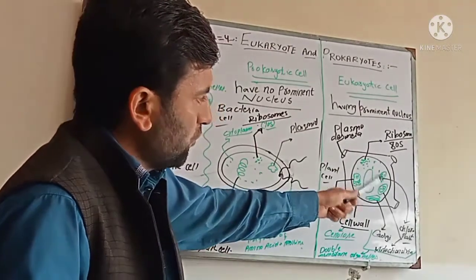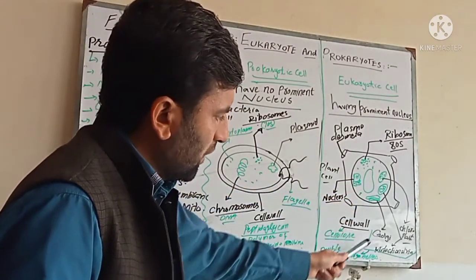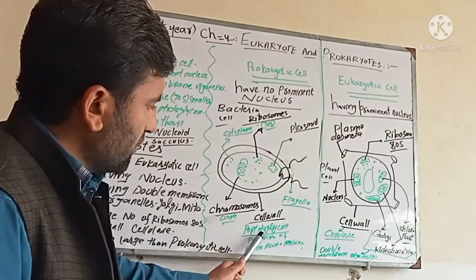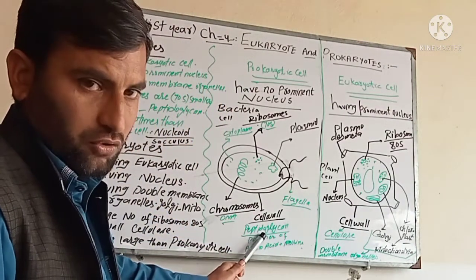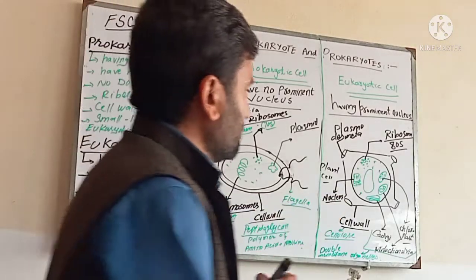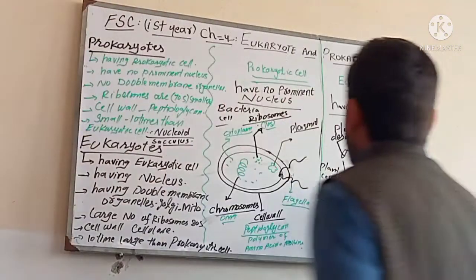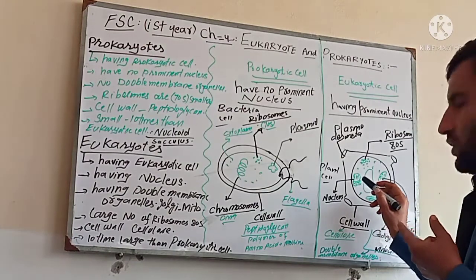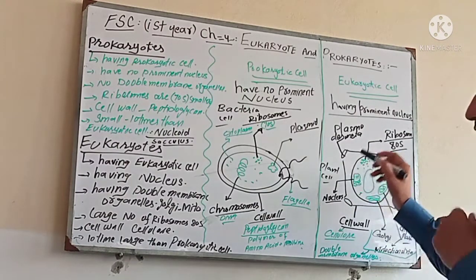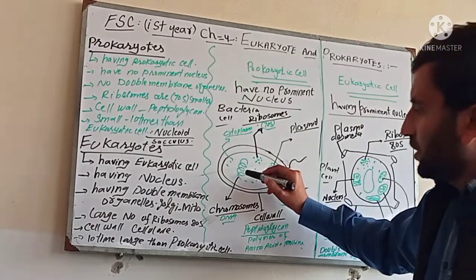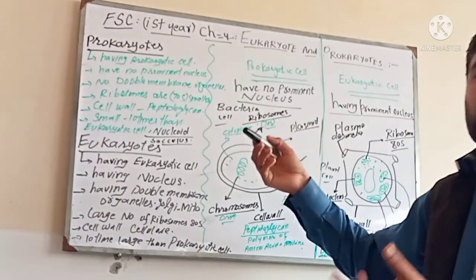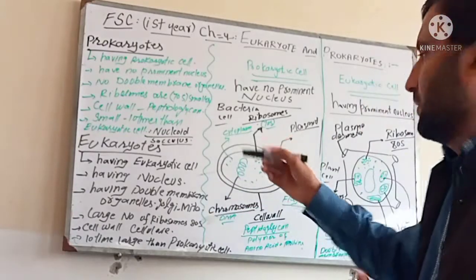Now we differentiate between the two. First of all, the Eukaryotic cell has a cell wall made of cellulose. The Prokaryotic cell wall is made of peptidoglycan. The second difference is the nucleus: in the Eukaryotic cell you can see a nucleus containing chromosomes and DNA material inside it, but in the Prokaryotic cell the chromatin material is inside the cytoplasm.